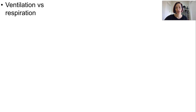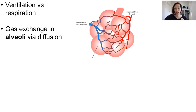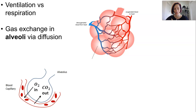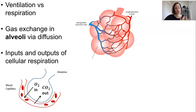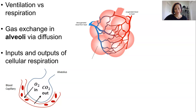Gas exchange is occurring during ventilation in tiny little chambers inside the lungs called alveoli, and this is where oxygen and carbon dioxide diffuse along their concentration gradient. The intake of oxygen can be used for cellular respiration to produce energy, which has a byproduct of CO2, and this is the gas exchange.